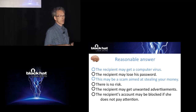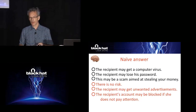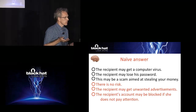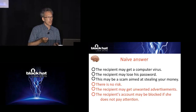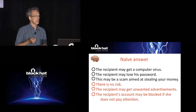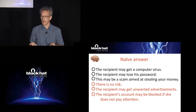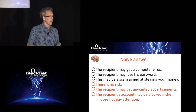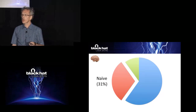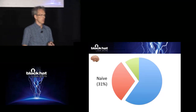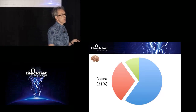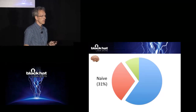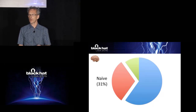There are also naive answers: 'there is no risk' — surely naive; 'the recipient may get unwanted advertisements' — naive in this context; and 'the recipient's account may be blocked if she doesn't pay attention' — super naive, they've really fallen for it. Do this with a large number of people and look at the rates. For this particular sneaky example, you got a naive rate of about one in three — about 30%. Traditional phishing attacks have about a 3–5% yield; this has an apparent yield of 30%, about an order of magnitude higher. Makes sense — this is a sneaky attack.